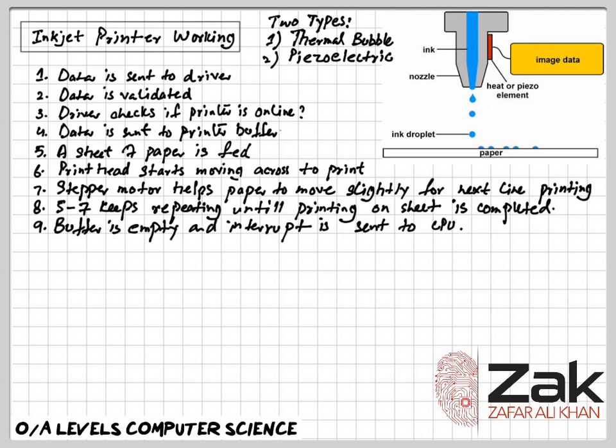Once the printer buffer is empty, the printer sends an interrupt to the processor in the computer, which is a request for more data to be sent to the printer. The process continues until the whole document is printed.